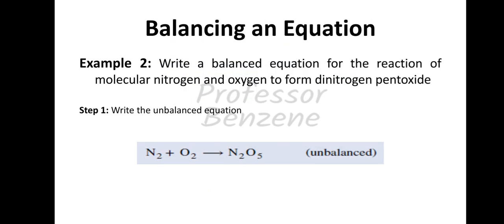Let's understand this with one more example. Write a balanced equation for the reaction of molecular nitrogen and oxygen to form dinitrogen pentoxide. Molecular nitrogen N2 plus O2 forms dinitrogen pentoxide. Dinitrogen means 2 nitrogen, pentoxide means 5 oxygen, so the product is N2O5. The unbalanced equation is N2 + O2 → N2O5.